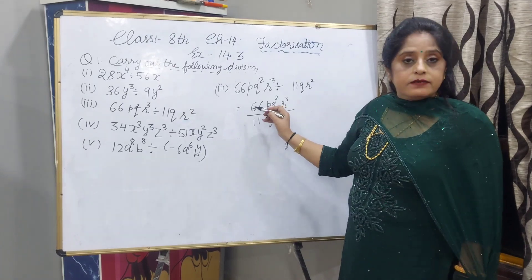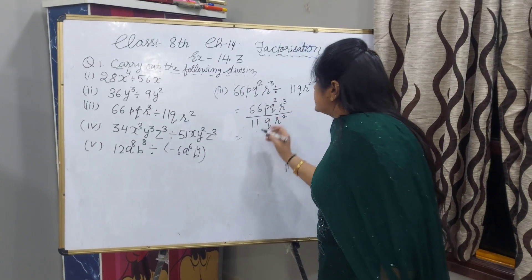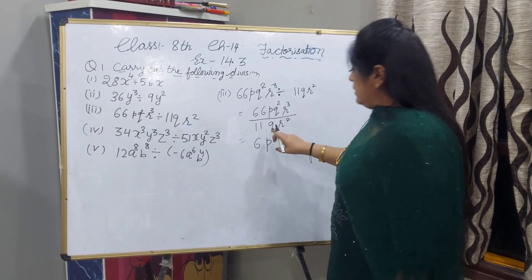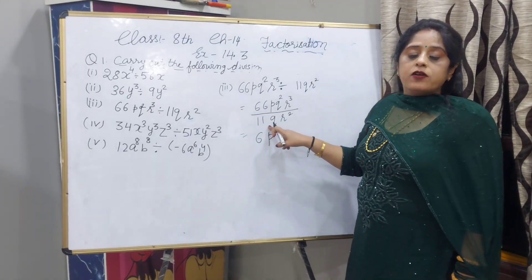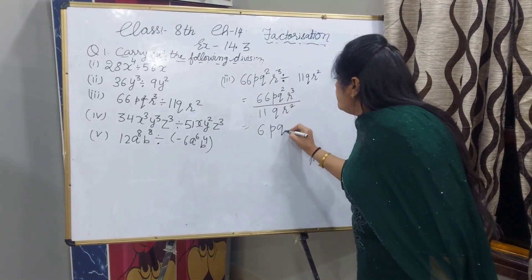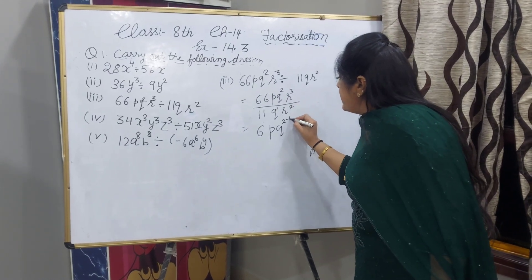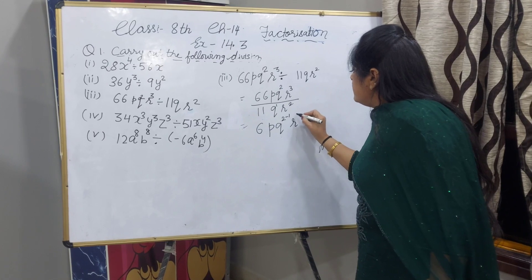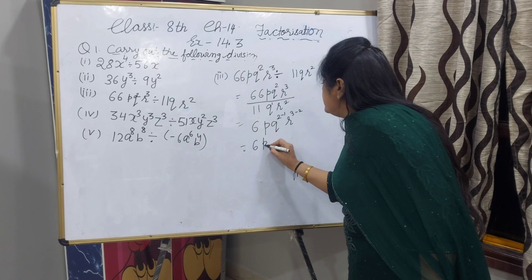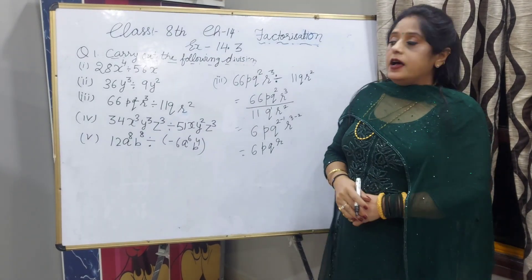11 and 66, we can cancel. 11 goes into 66 six times. P, as a denominator P is not there. Here we can write as p, q power 2 and this q power 1 minus 1, r raised to power 3 minus 2. 6pqr will be the answer.